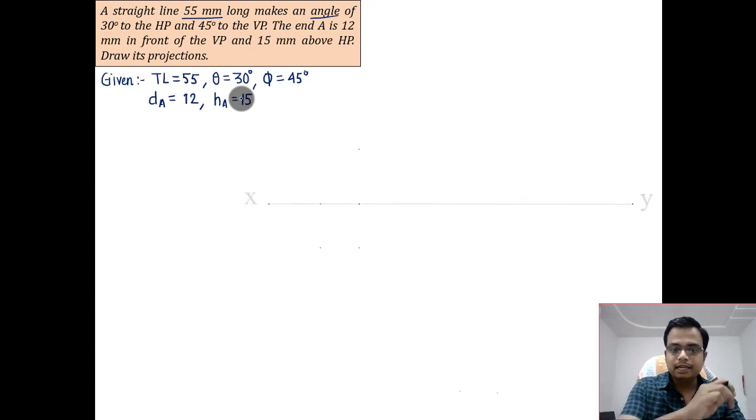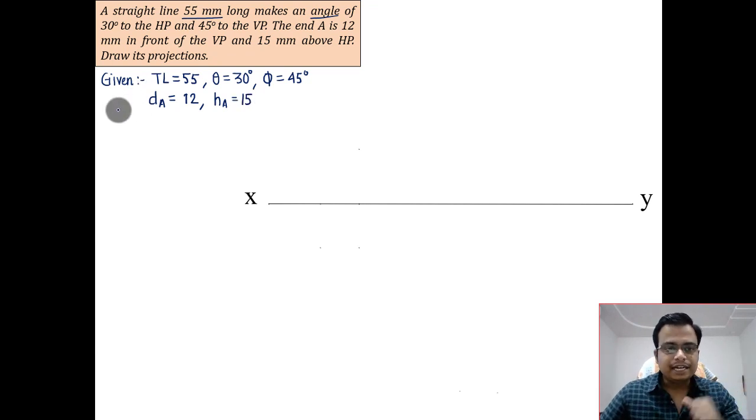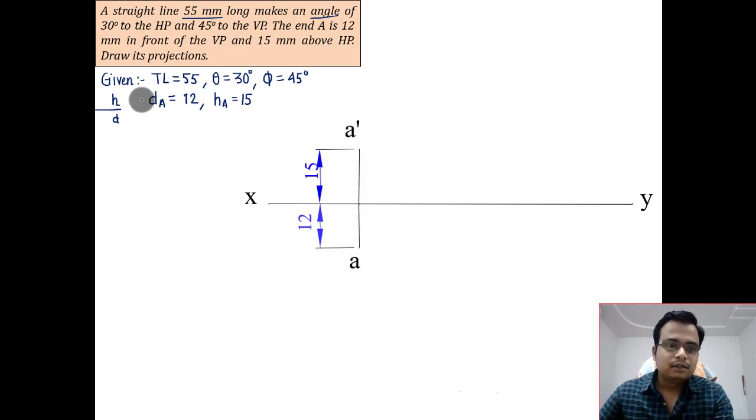Let's begin. Let's draw an XY line, above which we'll be making the front view and below which we'll be making the top view. For any point, it's a case of first angle projection. Remember, H over D. For any point situated in first quadrant, H above and D below. H is 15 and D is 12.